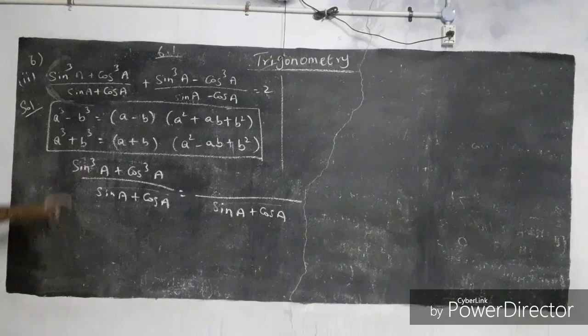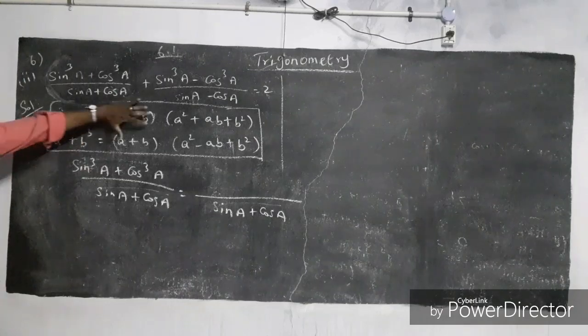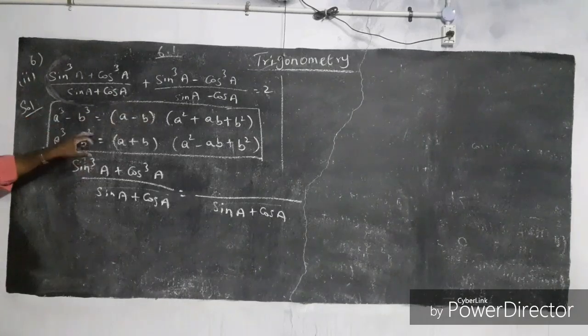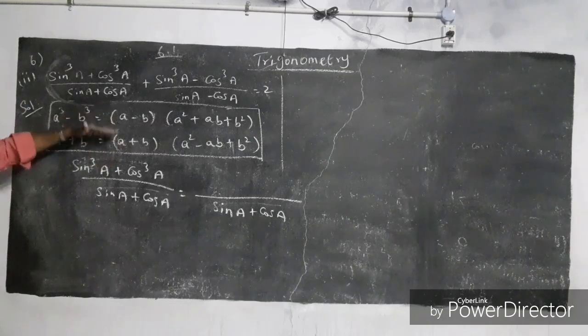What identity is a cube minus b cube? This is an identity. Another one is a cube plus b cube — this is also an identity. We can apply these two identities.